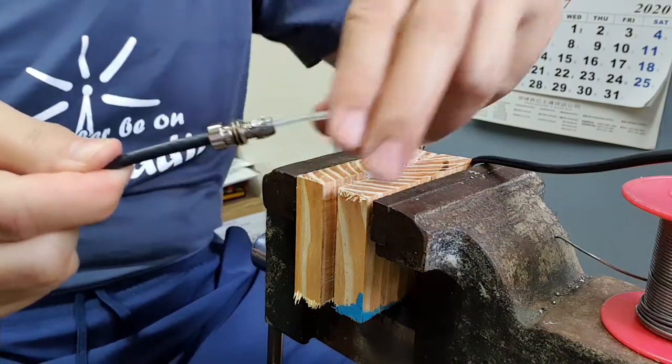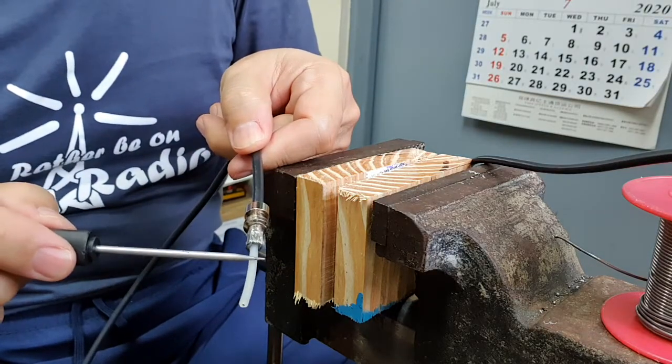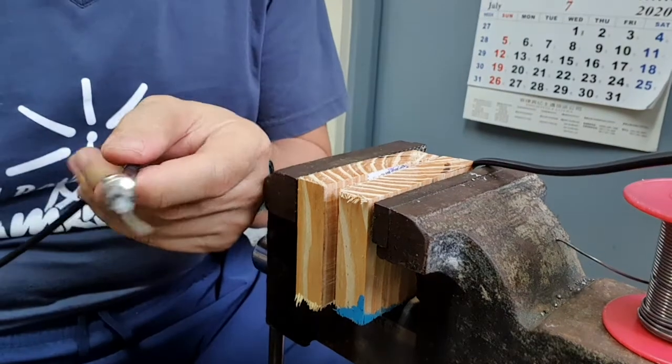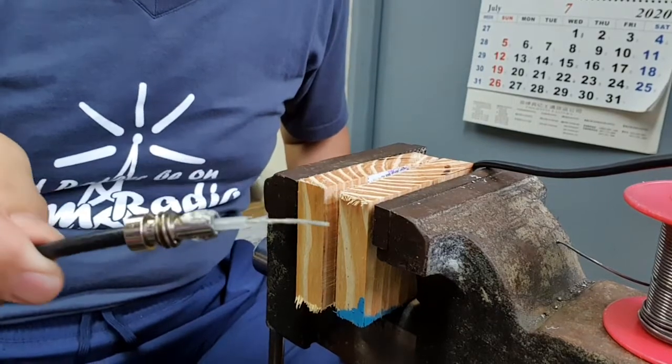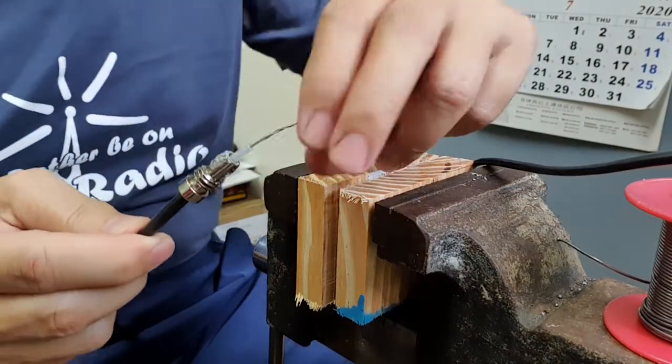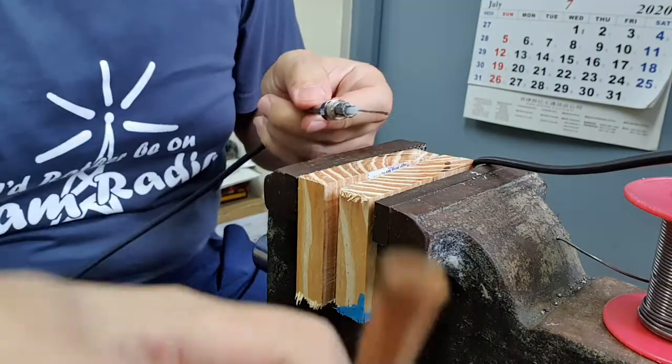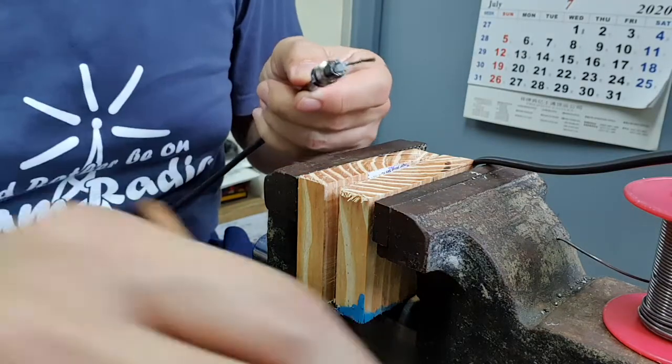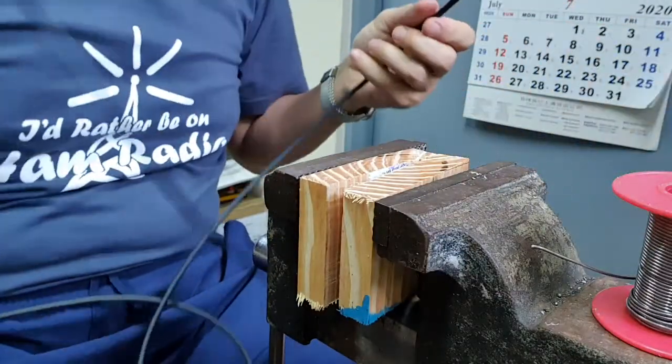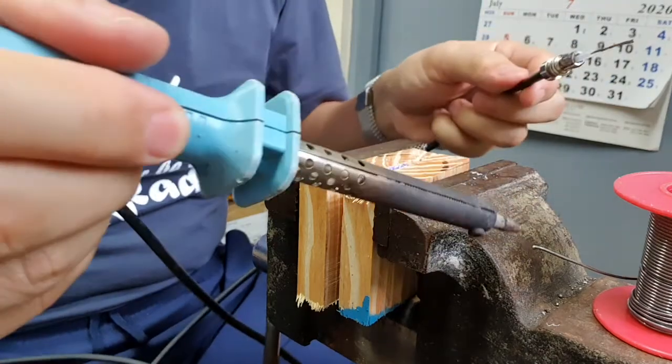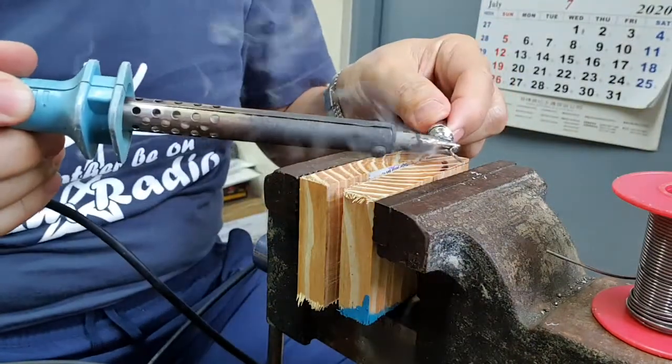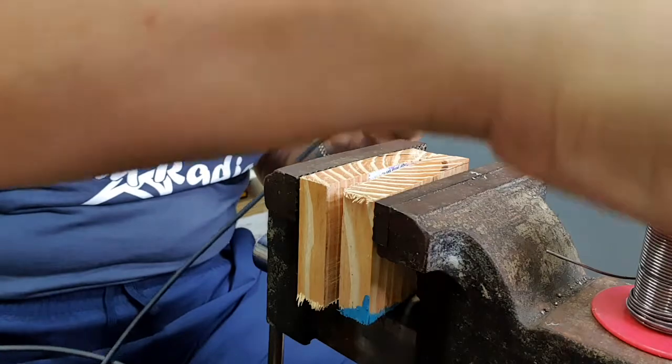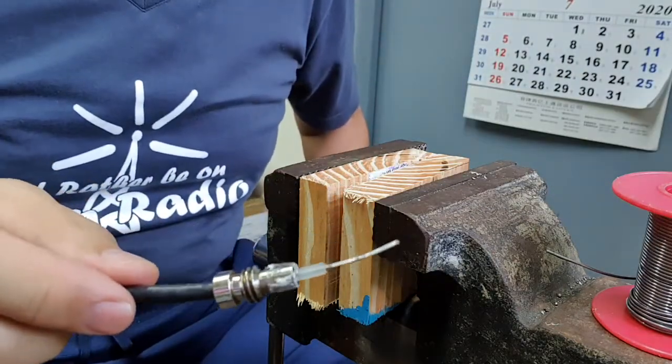Next thing to do is splice off the insulation on the center conductor. So I've already spliced the center. Now I'm going to tin this, also tin this. There you go, perfect. So it's tinned and ready to be assembled.